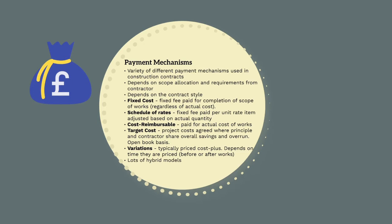Finally, variations — also known as changes to scope — are typically priced at cost-plus. Contracts will typically specify a profit margin for variations, say 8%, and the contractor will be paid the actual cost plus an 8% margin. The contractor will typically have to provide invoices, day sheets, and labour records to justify these costs. Lots of hybrid payment models also exist; for example, a contract might have a lump sum component, schedule of rates component, and cost-reimbursable component, reflecting the scope and risk allocation with the contractor.